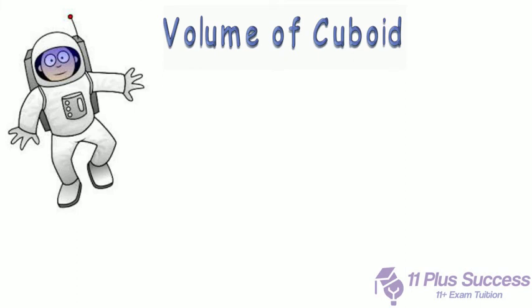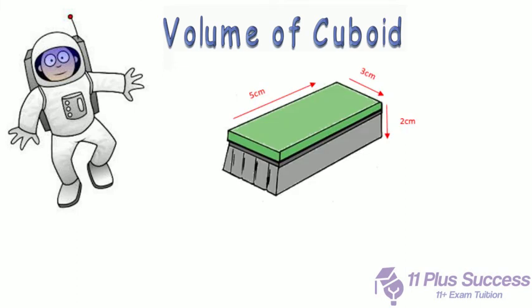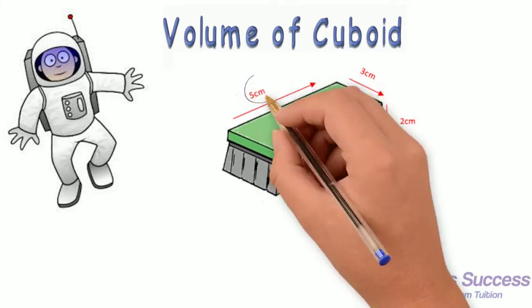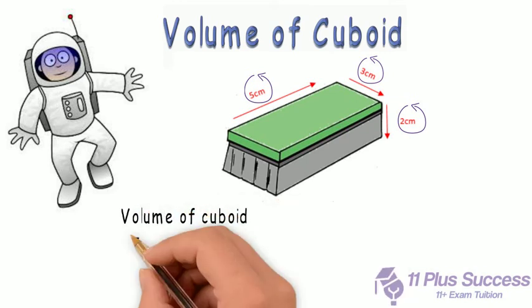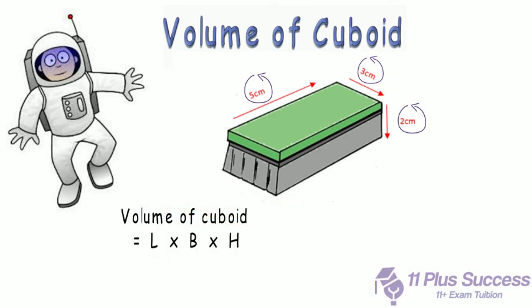Volume of Cuboid. Find the volume of the whiteboard duster given below using the measurements. To find the volume of a cuboid, we simply multiply length, width, and height. Volume of Cuboid equals length times width times height.